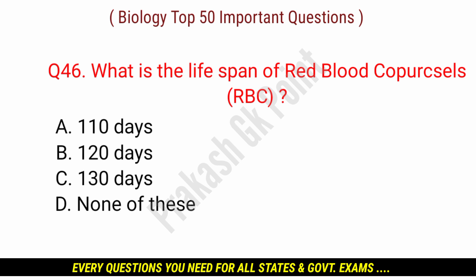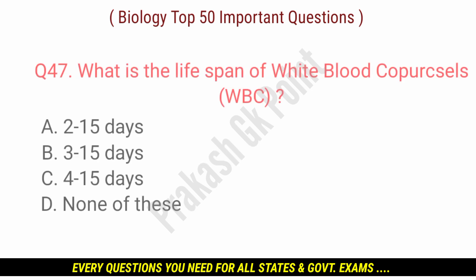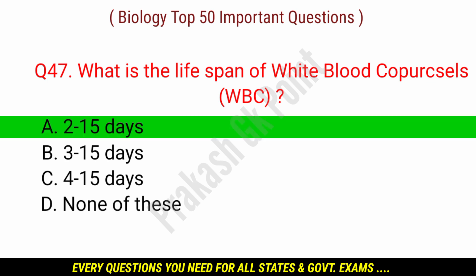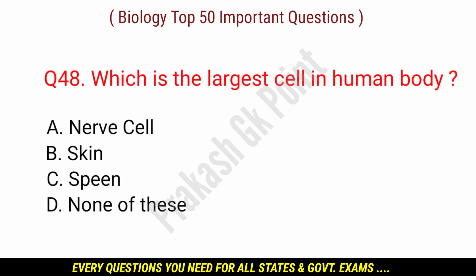Next question: what is the life span of RBC? Answer: option B — 120 days. What is the life span of WBC? Answer: option A — 2 to 15 days.